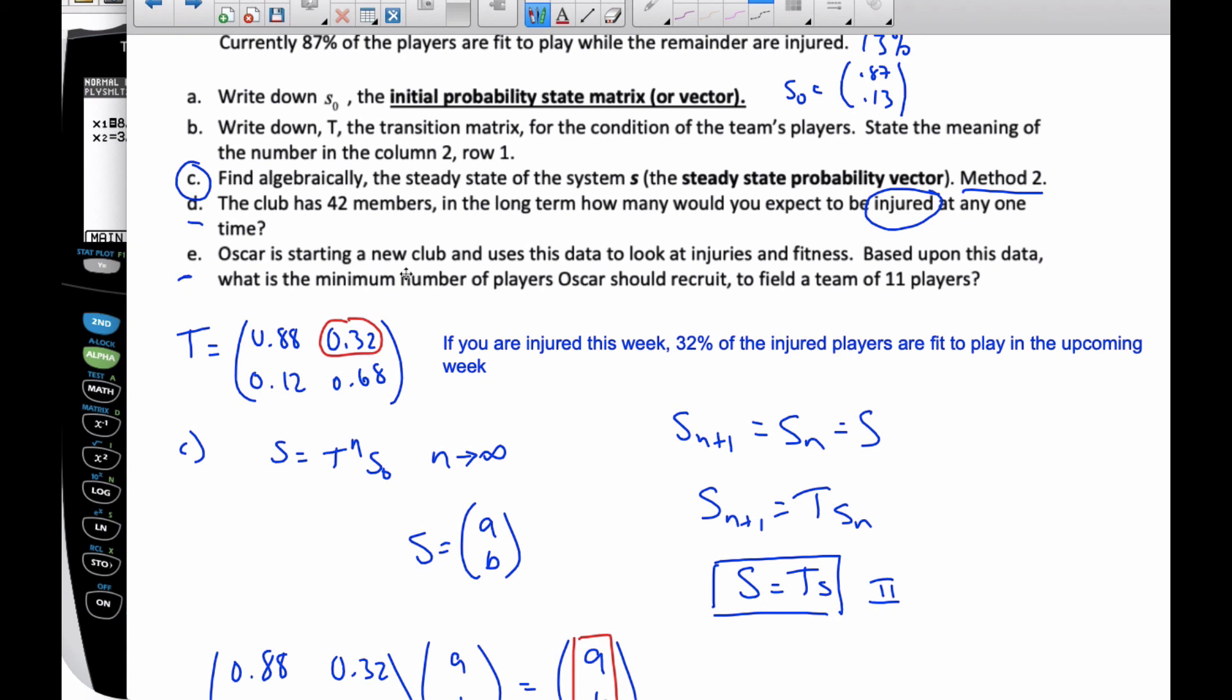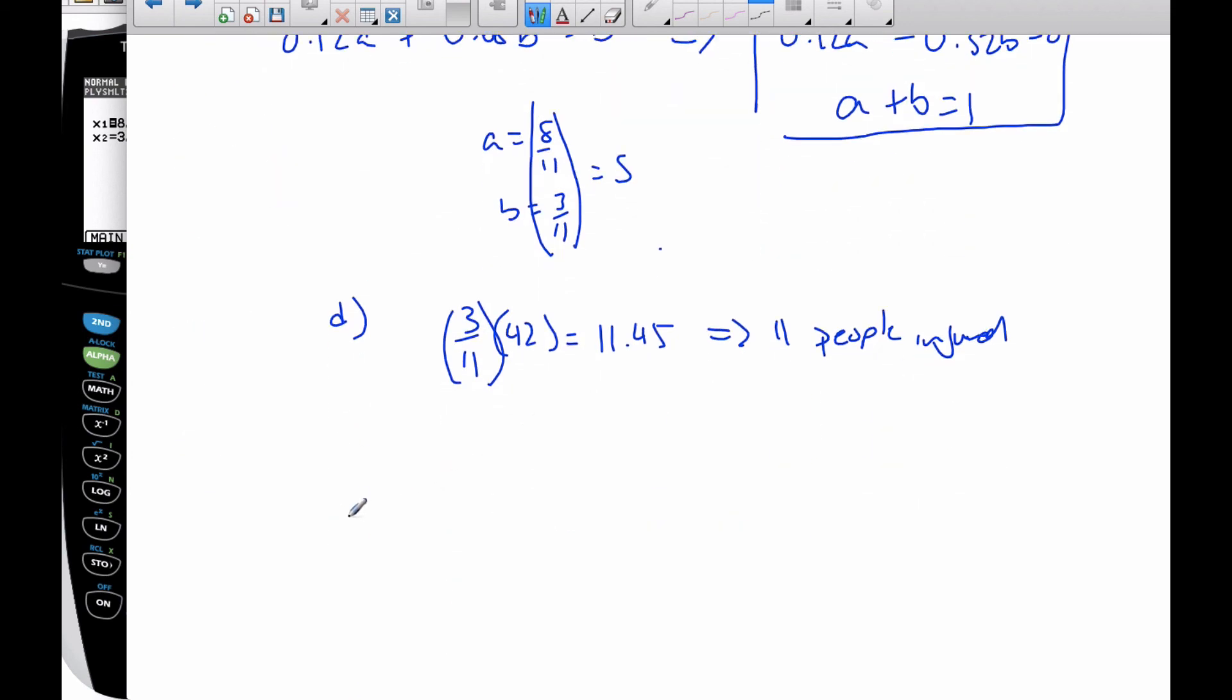Now, E part says Oscar is starting a new club and uses this data to look at injuries and fitness. Based upon this data, what's the minimum number of players Oscar should recruit to field a team of 11? Well, if I want to have a field of 11, I need 8 out of 11 players who are fit. I'm going to multiply it by P. I don't know what P is, but when I'm done, I need to have 11 players.